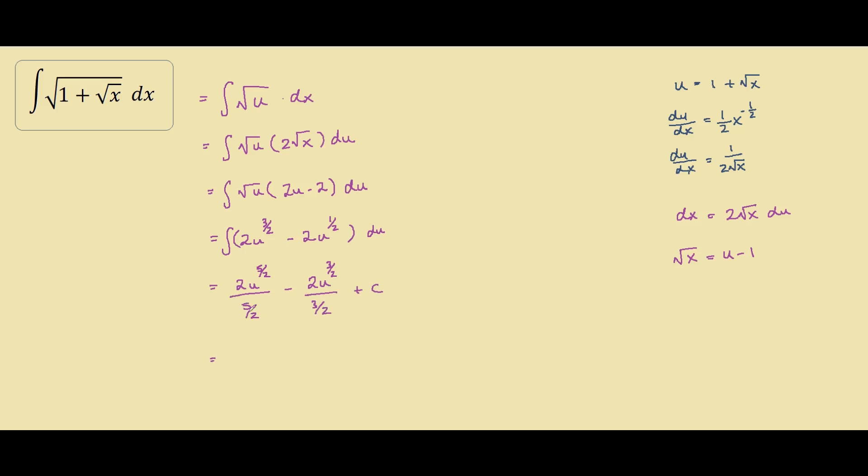So 2 divided by 5 over 2 is the same thing as 2 times 2 fifths. So we have 4 fifths of u to the 5 over 2. Minus by 2 times 2 thirds, would be minus 4 over 3, u to the 3 over 2 plus c.